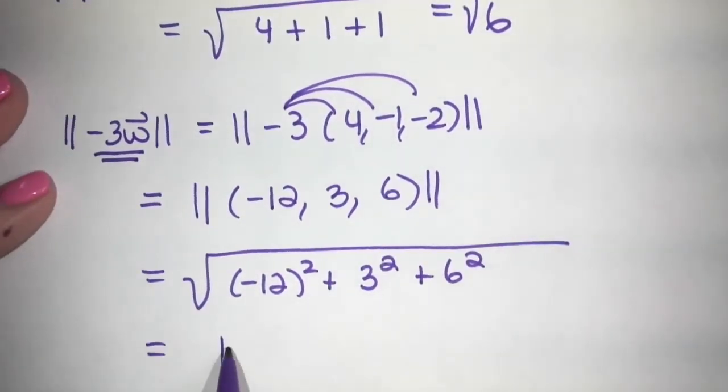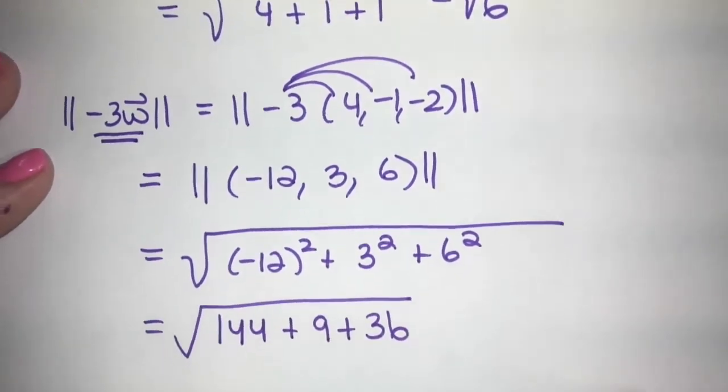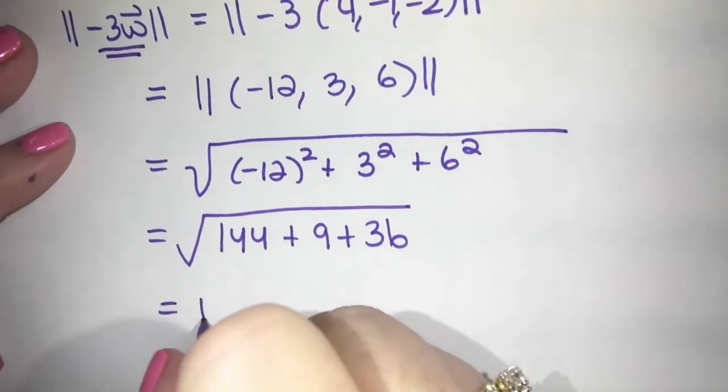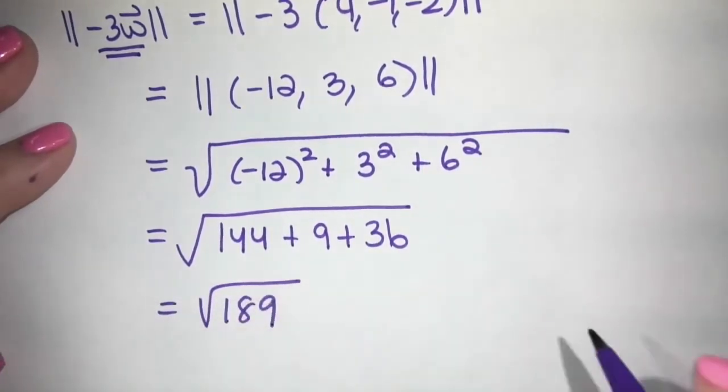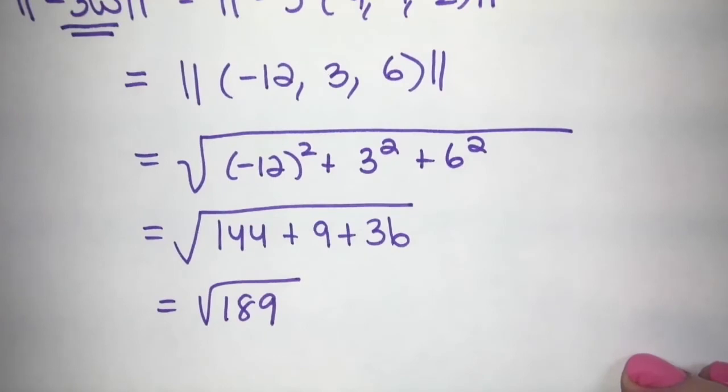And the numbers are a bit big, because 12 squared or negative 12 squared are 144. So plus nine plus 36. And we get the root of 180. So those are some examples of magnitude questions that could be on the exam.